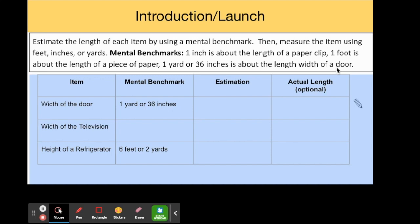We need to fill in the blanks in this table. Some blanks are already filled in. For example, the mental benchmark for a door is 1 yard or 36 inches. This means thinking about which measuring tool is appropriate and making an educated guess about how big the item is in comparison to these tools. I'm going to estimate that the width of the door is 36 inches.